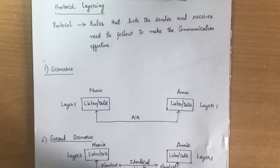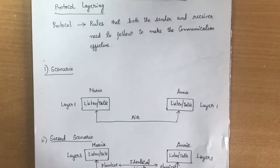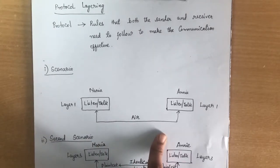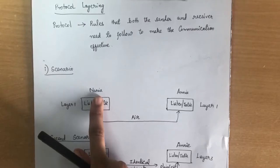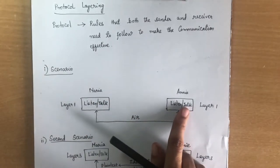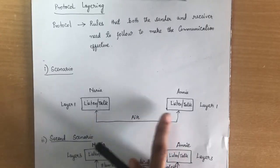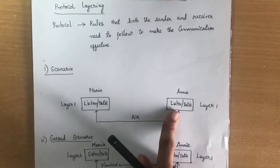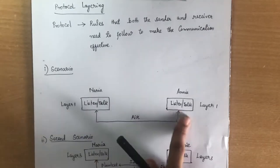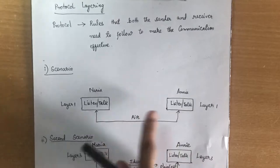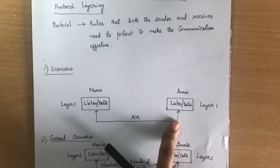To better understand protocol layering, we have developed two different scenarios. The first scenario: the communication is very simple, so it occurs in only one layer. Assume that Maria and Annie are neighbors in the same place and location — they can communicate face to face. Both talking and listening take place in the same face-to-face setting, so we require only one layer.